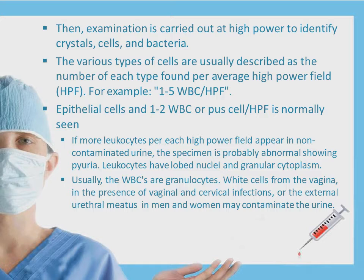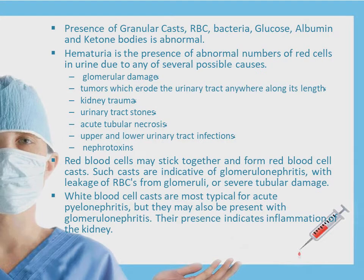White cells from the vagina in the presence of vaginal and cervical infection, or from the external urethral meatus in men and women, may contaminate the sample. So it is very important to be 100% sure that the urine is collected in a highly hygienic state and transferred without any contamination. The presence of granular casts, red blood cells, bacteria, glucose, albumin, or ketone bodies are all abnormal — even if you see just one, it is abnormal.